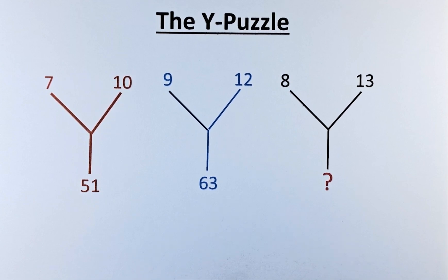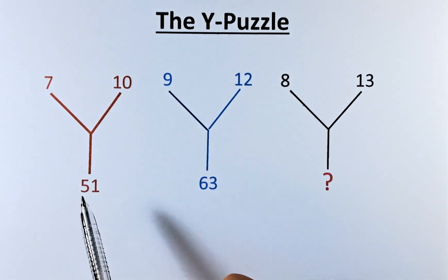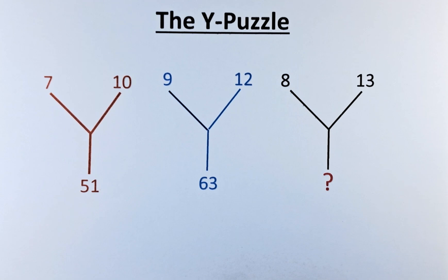If you can see, the big numbers are at the bottom. So that must be the solution to the numbers on top. 7 and 10 to give you 51, 9 and 12 to give you 63, and 8 and 13 to give you a question mark. Without further ado, let's try to solve this problem.